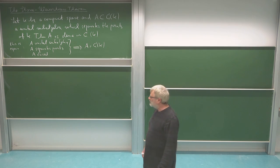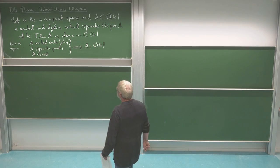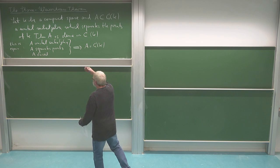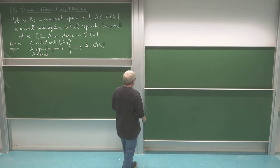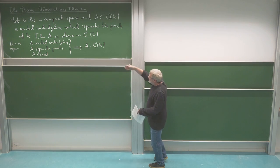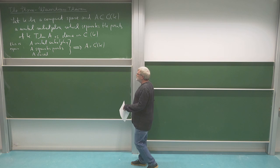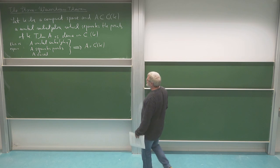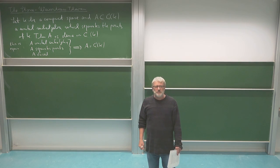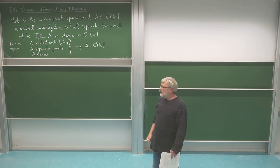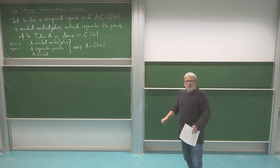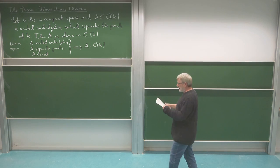Now we are ready for proving Stone-Weierstrass. So let us assume, in this equivalent version, we assume I have a unital subalgebra which separates points and which is closed, and I want to show it must be all of the continuous functions.